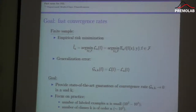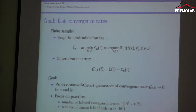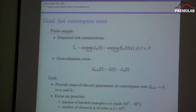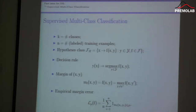We want to provide state-of-the-art guarantees for generalization error, and our primary focus is practice because the problem is motivated by practice. In image recognition, we don't have too many labeled examples, but we have a huge number of classes — the number of classes is more or less on the order of the number of labeled examples. For instance, in mushroom classification from ImageNet, we have about 1000 objects and about 100 classes.